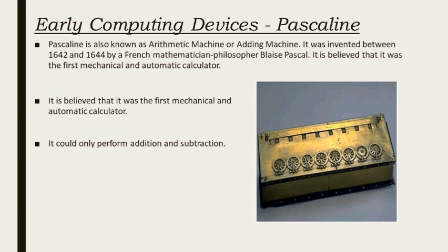It was invented between 1642 and 1644 by a French mathematician and philosopher Blaise Pascal. It is believed to be the first mechanical and automatic calculator. It could only perform addition and subtraction.